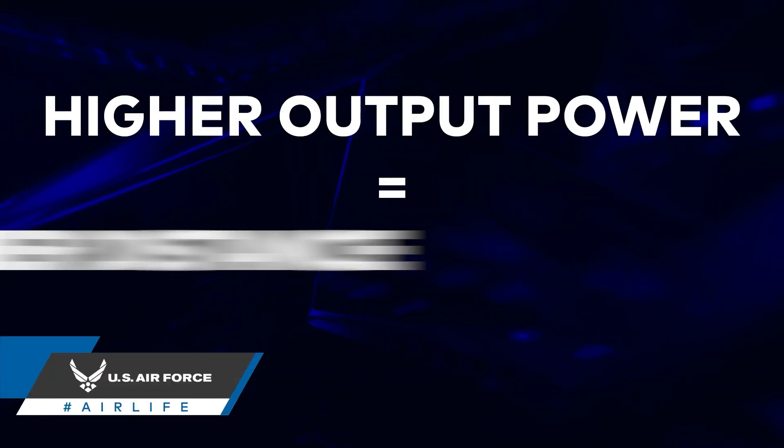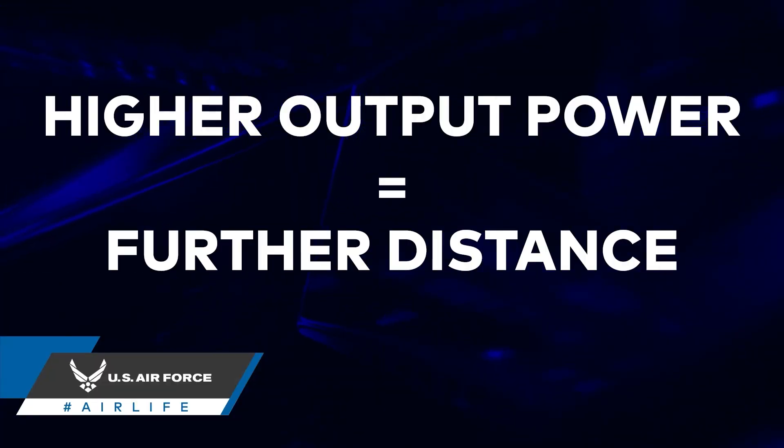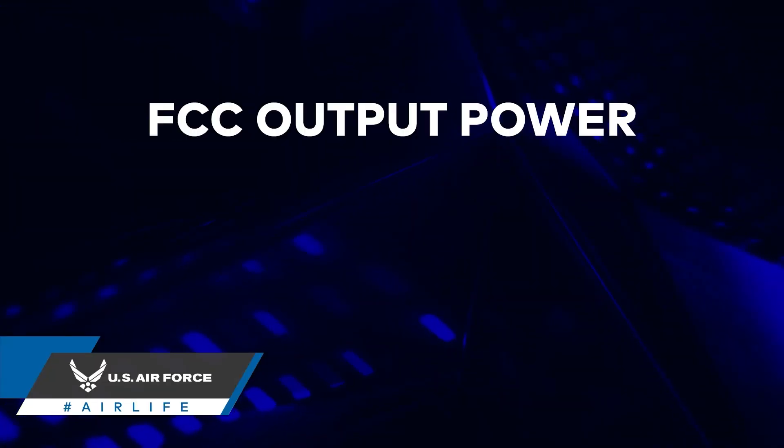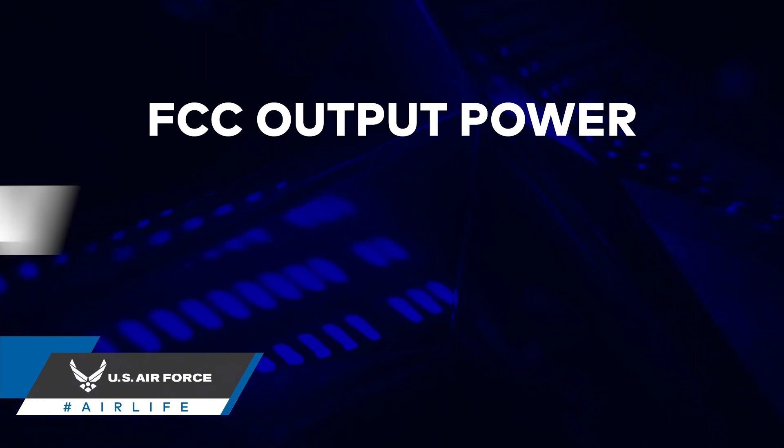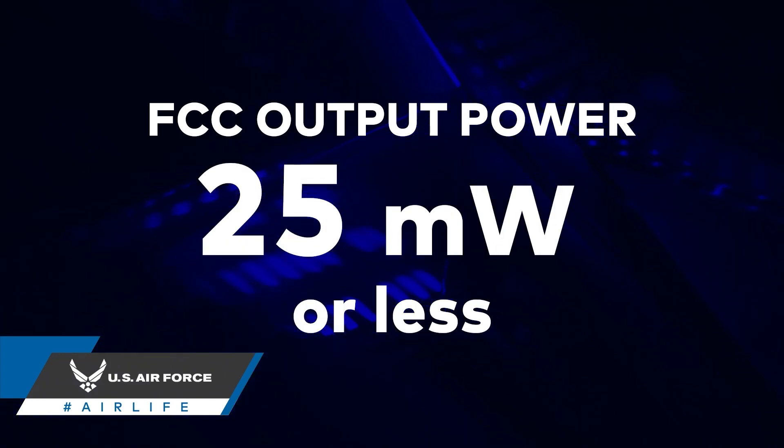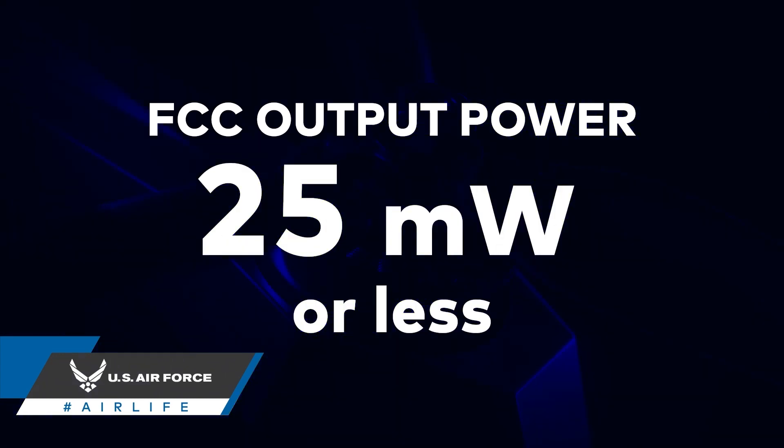The next thing worth mentioning is the output power of a video transmitter. As a general rule of thumb, the higher the output power, the further you can go. FCC regulations allow for an output power of 25 milliwatts or less. If you would like to output a higher power, you would have to obtain a ham radio license from the FCC.